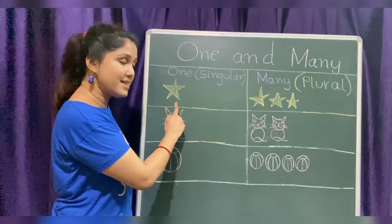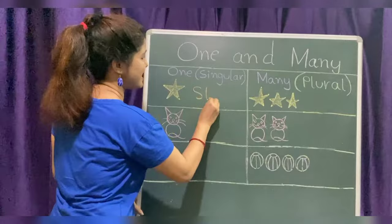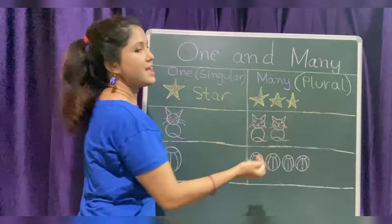What is this, children? This is a twinkle twinkle little star. How many stars? One star — S, T, A, R — star. Here, how many stars? Let's count: one, two, three. Three stars.